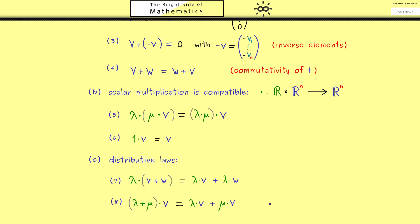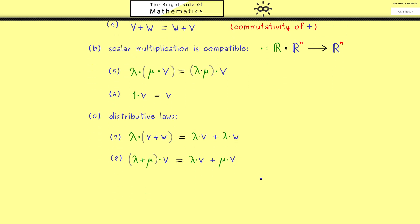In summary you see these are the eight properties R^n as a vector space satisfies. And indeed these properties will help us to define abstract vector spaces later. So this should not surprise you. In the end a vector space should be something that satisfies all these eight rules.